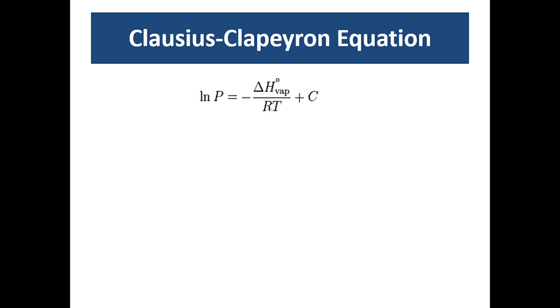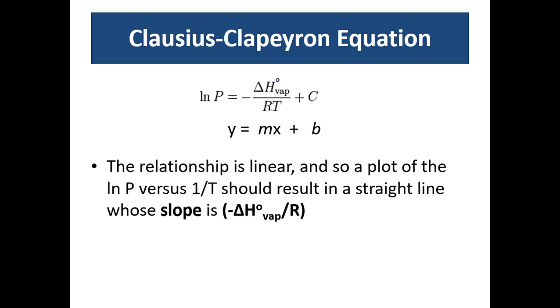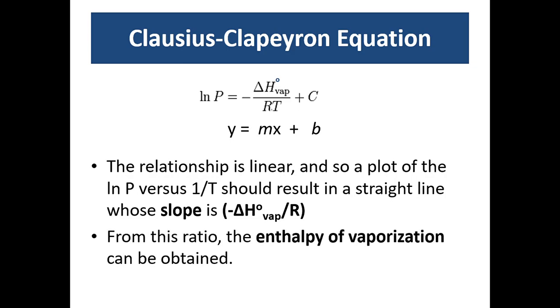The important thing about the Clausius-Clapeyron equation is that it has the format of a straight line, y equals mx plus b, where m is the slope, b is the intercept. And so, because the relationship is linear, a plot of the natural log of P versus the reciprocal of the temperature should give us a straight line. The slope of that line should be minus delta H_vap over R. And since we can calculate the slope and R is a constant, we can use this ratio and the enthalpy of vaporization can be obtained this way.